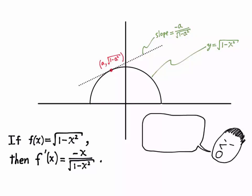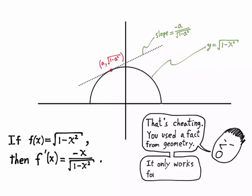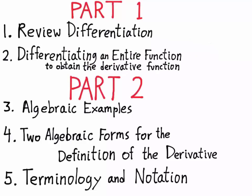It can be that easy to find the derivative. But this method used a fact from geometry — someone might say that's cheating. Everything I did was correct analysis, so I don't think it's cheating. However, it only works for semicircles; this method doesn't work for general functions. So what I really need to do is use the standard algebraic method instead of geometry. That's what I'll do next — take the same function and differentiate it using the standard algebraic method.